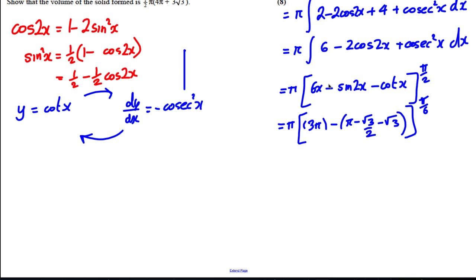Let's tidy this up. This is going to be therefore pi times 3 pi take away pi is 2 pi, and then we're going to have plus root 3 over 2 plus root 3. If I tidy this up, therefore it's 2 pi, a half root 3 plus 1 root 3 is plus 3 over 2 root 3.